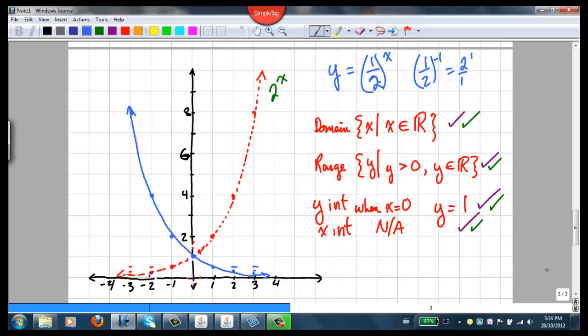If we look at the characteristics, all the same. Same domain, same range, same y-intercept, still no x-intercepts. So all those characteristics are the same, except that the function looks like it's reflected around the y-axis.